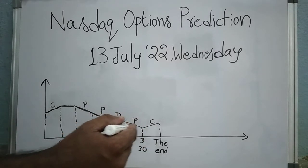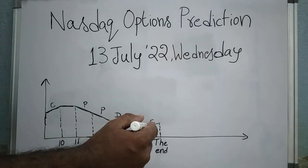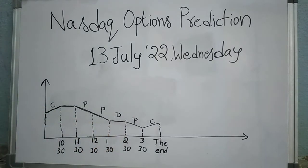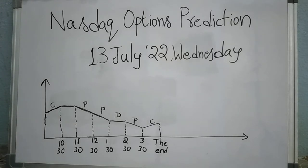From 3:30 p.m. till the end, the market may show some upward movement, so that we may have an opportunity to take a call option in this time period. Looking at the overall trend for Wednesday, it may be a negative trend more possibly. This prediction is based on astrology only — please observe, and if you sense anything going against this prediction, please stop placing your bets. If you like this video, please subscribe, share with your friends, like the video, and follow the news very carefully. Thank you for watching.